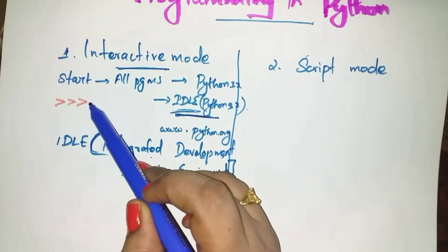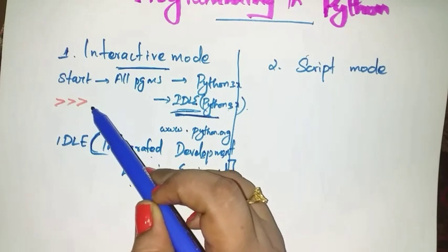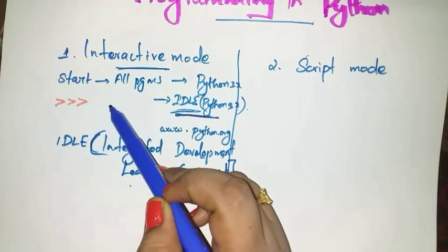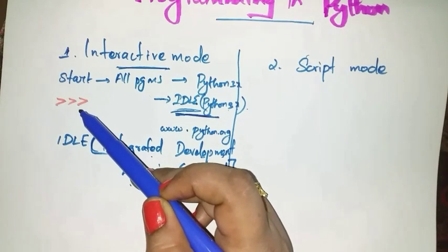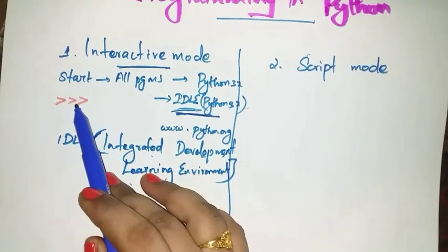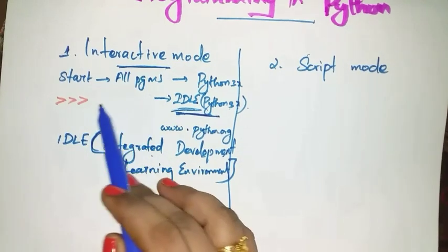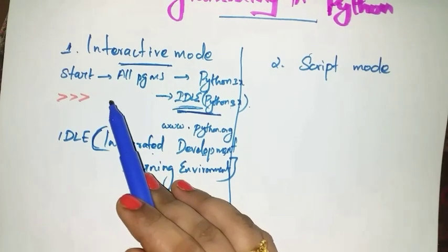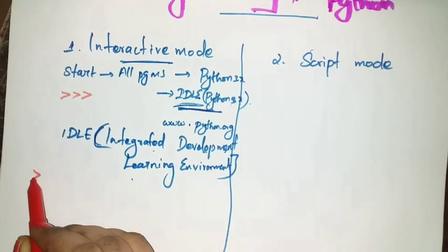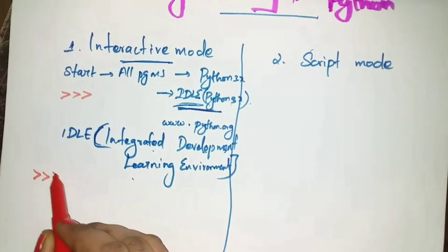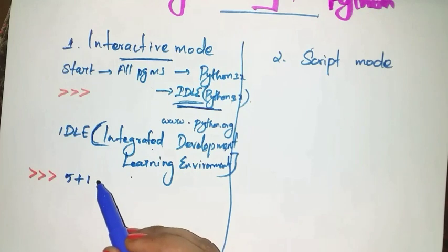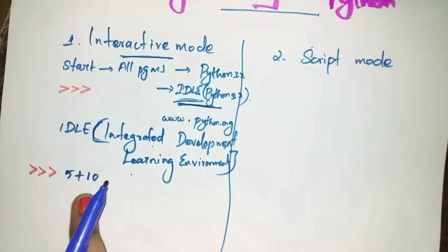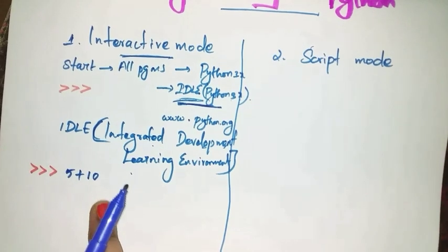In interactive mode, you can write Python codes at the Python command prompt. This Python prompt always appears on the screen and indicates it is ready to accept instructions. You write your Python codes here, and you will get the results immediately. For example, if you want to add two numbers, 5 and 10, you write 5 + 10 and press the Enter key.